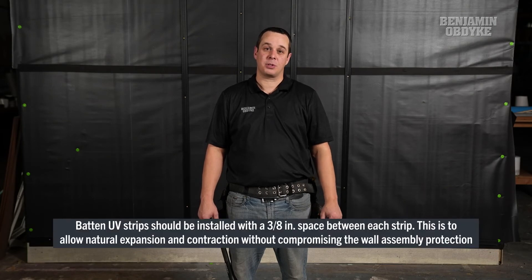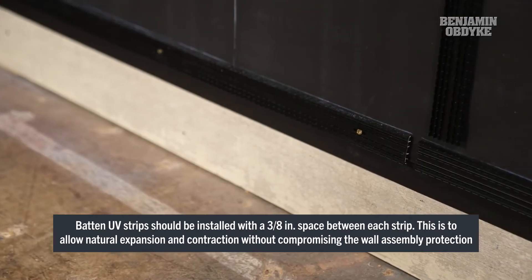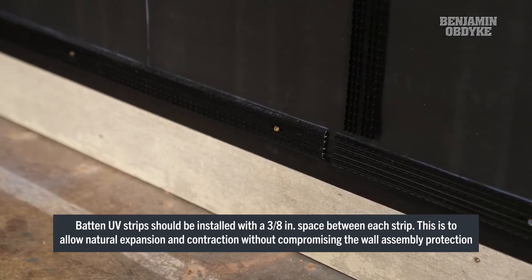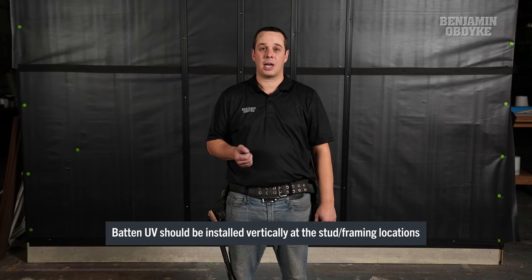Our Batten UV can be installed in many different options. We have it installed horizontally at the bottom of the wall detail, which acts as a bug screen and allows liquid water to drain through. We also have it installed vertically to mimic the stud locations. This is a non-compressible batten that will allow airflow to circulate behind whichever open joint cladding you choose.